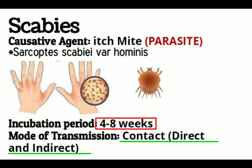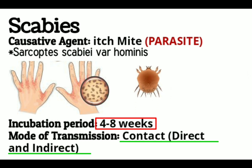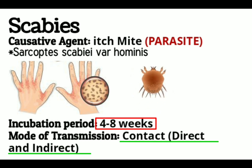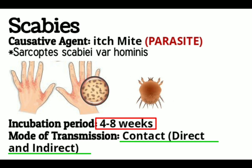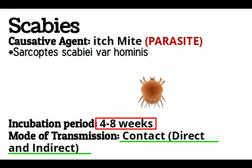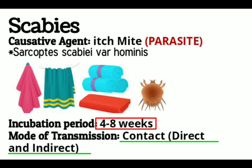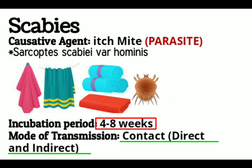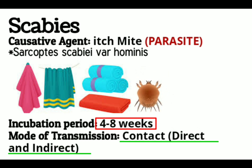Scabies in adults is frequently sexually acquired. Scabies is sometimes also spread by indirect contact — sharing articles such as clothing, towels, or beddings and linens used by an infested person. However, kitchen utensils like spoons and forks do not spread scabies because it is not transmitted via droplets.